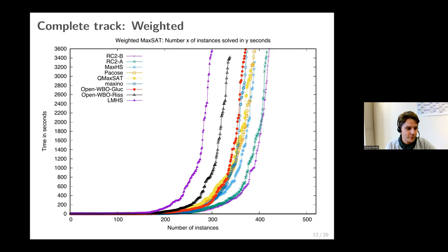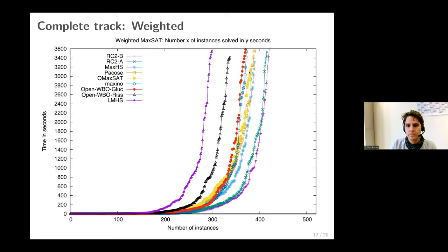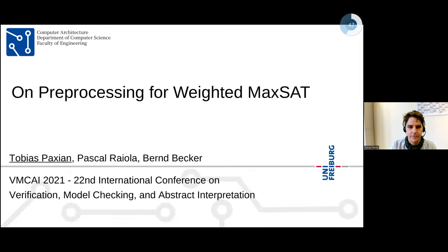In the 2018 MaxSat evaluation, a new solver RC2 was introduced in two variants. RC2 ranked first, then MAX-HS and PAKOSA, which solved the same number of instances—though PAKOSA was slightly slower. QMAXSAT ranked fifth, having also introduced a new radix-weighted totalizer encoding. PAKOSA nearly achieved the goal of matching MAX-HS, which had been the best solver in previous years.